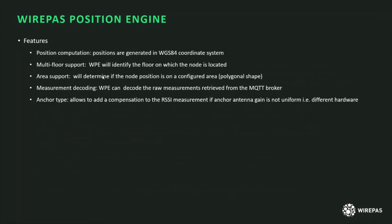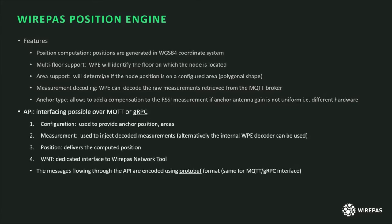Regarding the Wirepass Positioning Engine features: obviously there is position computation. One thing to note is that we use WGS84 — the standard latitude and longitude used by GPS. We have support for multi-floor detection, so we can detect which floor of a building the tag is on. We can also provide area support, determining which area a tag is in — if the area is configured in the system, as a polygonal shape. Measurement decoding is included: the WPE includes a decoder which can process raw measurements. We also support different anchor types, since hardware differences can result in RSSI offsets that can be compensated according to anchor type.